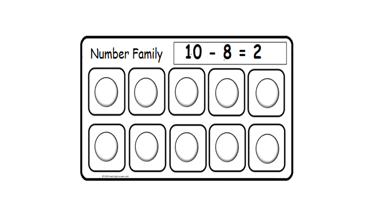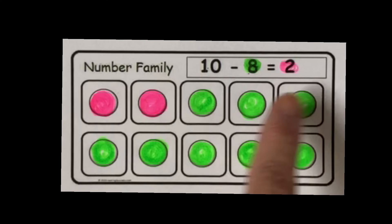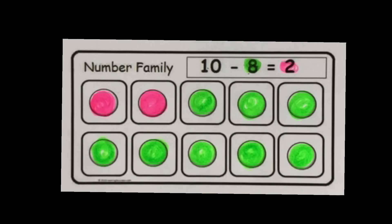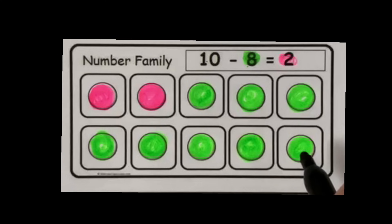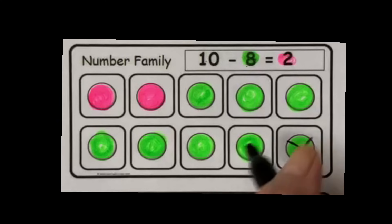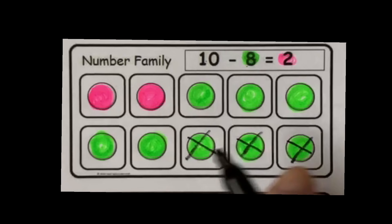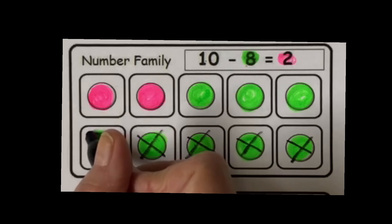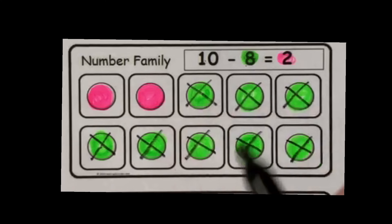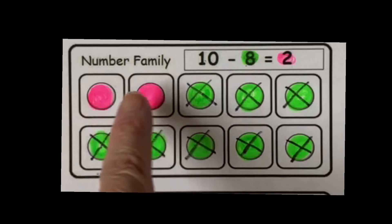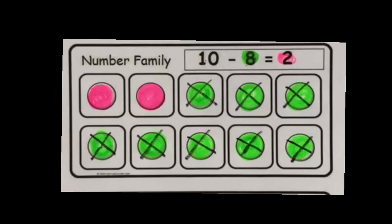Now we'll complete the subtraction 10 frame activity with the number family 2, 8, and 10. Fill in all 10 circles. 10 minus — remember, 8 consisted of the green circles — so 10 minus 8: remove 1, 2, 3, 4, 5, 6, 7, 8. That equals 2. So 10 all together minus 8 leaves 2 remaining.